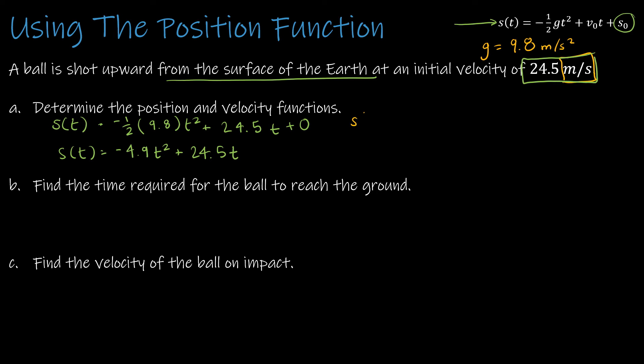Finding s prime of t gives us the velocity function. Using the power rule: negative 4.9 times 2 is negative 9.8, so the first term becomes negative 9.8t. For 24.5t, the constant is 24.5 and the derivative of t is 1, so it's just plus 24.5. The velocity function is v of t equals negative 9.8t plus 24.5.